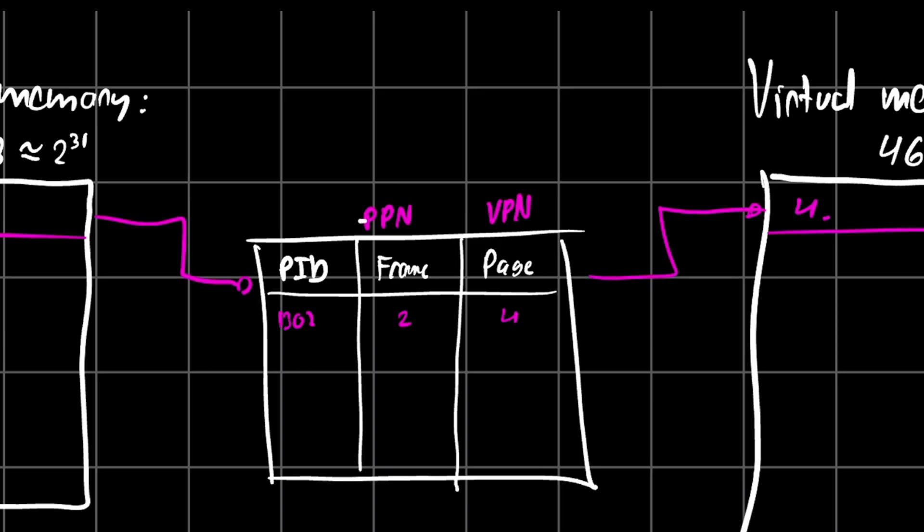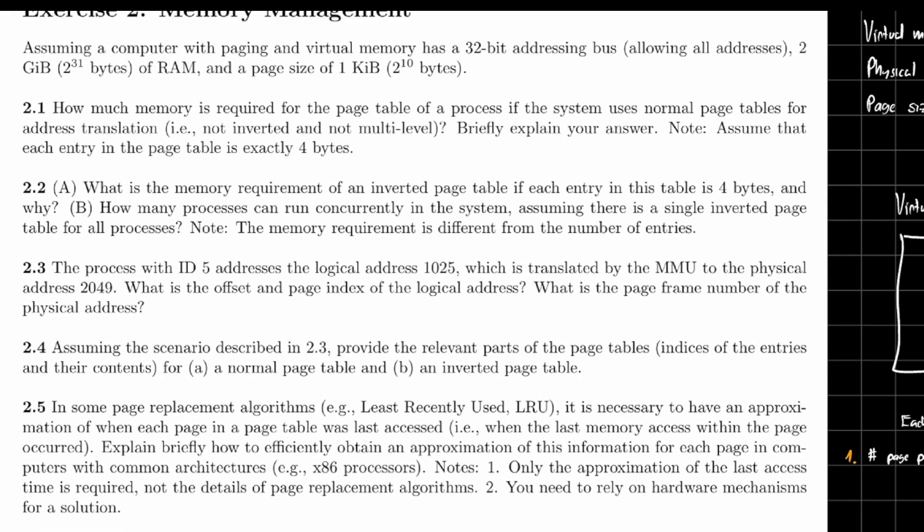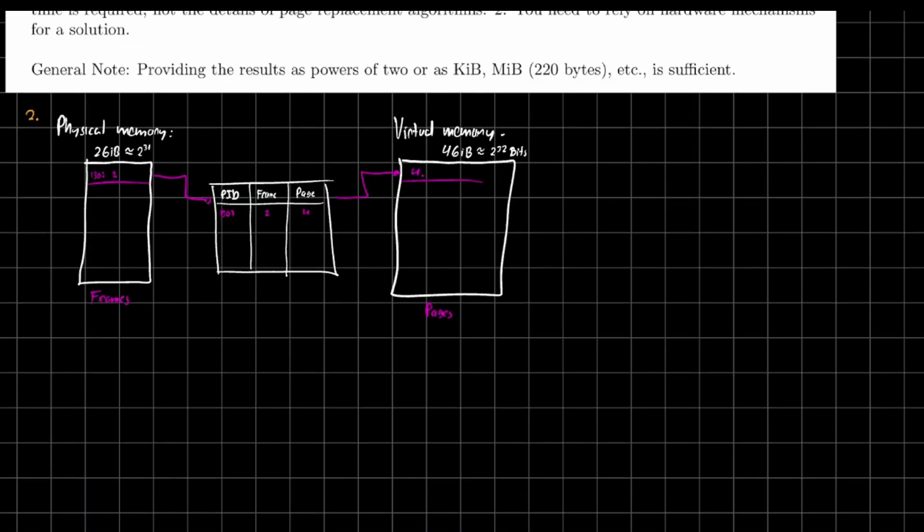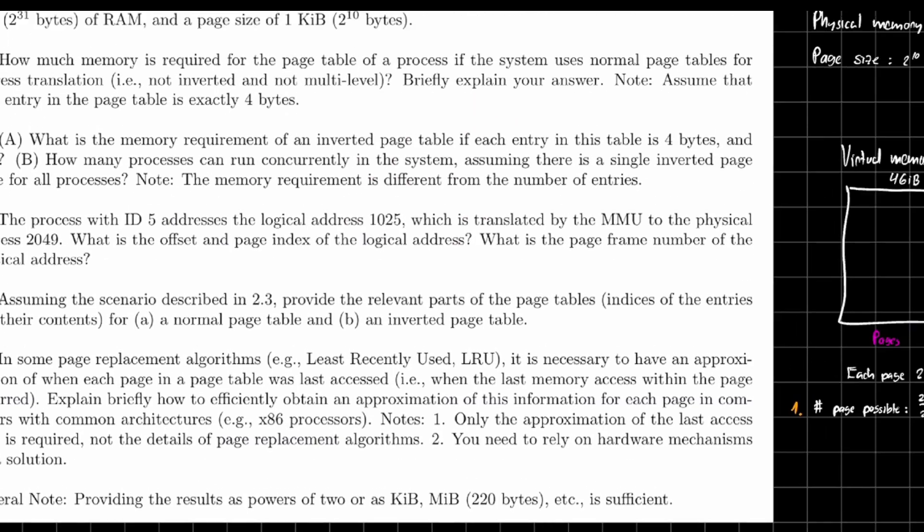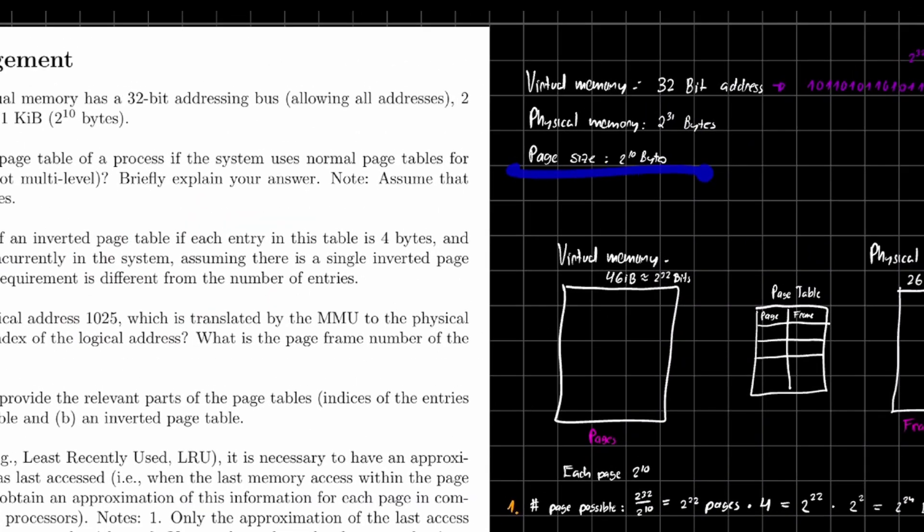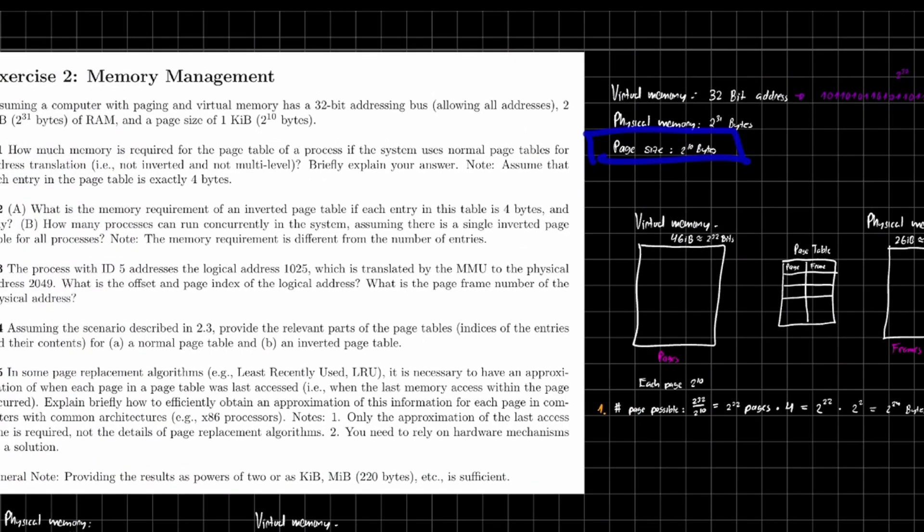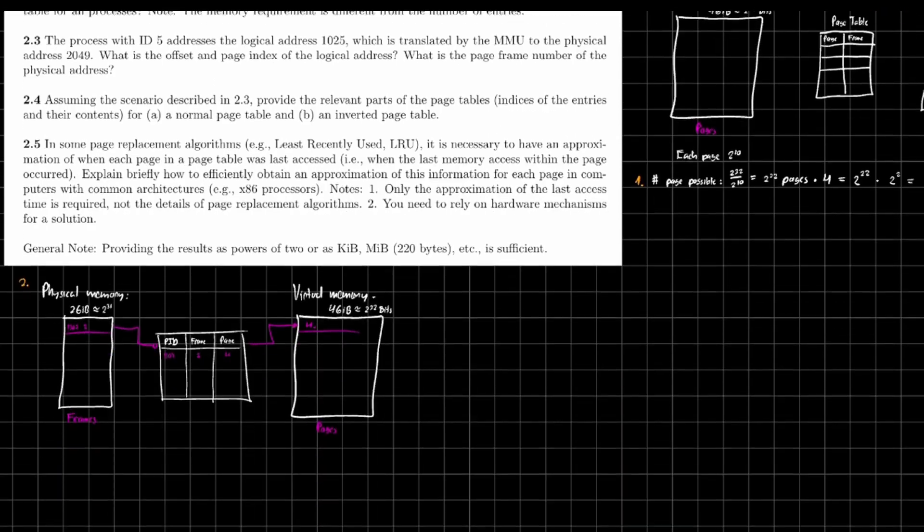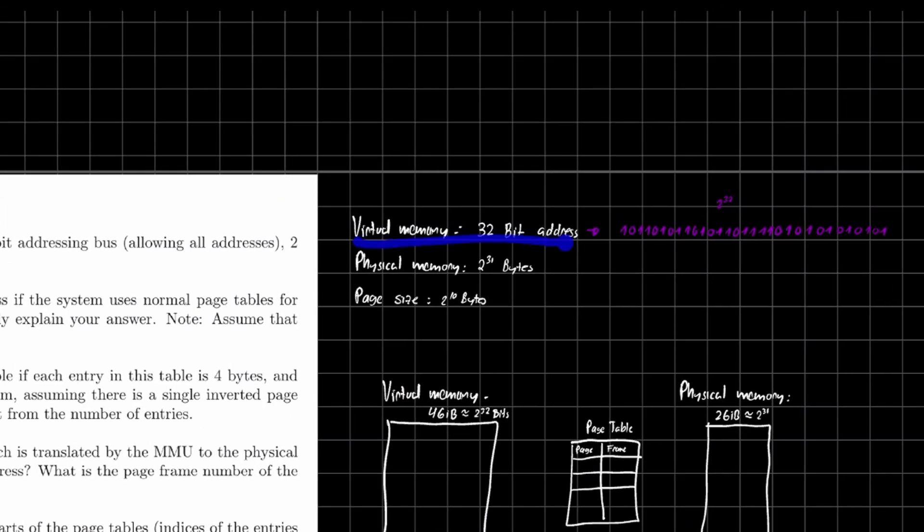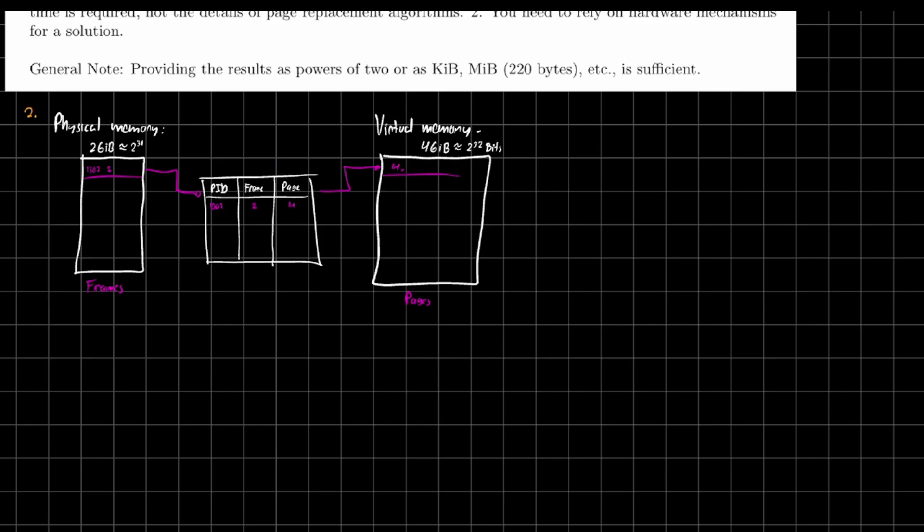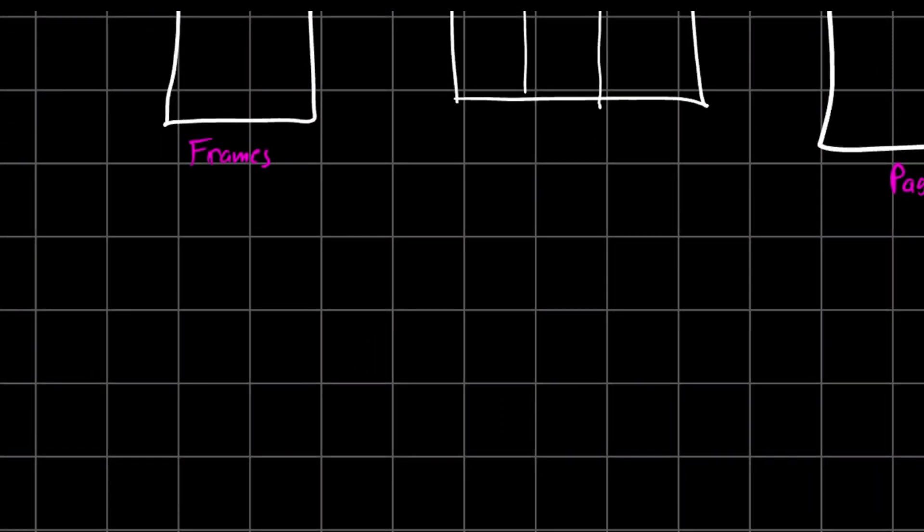So now we have the theory. So they're asking us now, what is the memory requirements of an inverted page table if each entry in this table is 4 bytes? Well, if we have this, and we basically know that the page size is of 2 to the 10 bytes, that means each frame size is going to be the same. So instead of taking the virtual memory space, we're going to take basically the physical memory space. So we're going to only divide physical memory space by the size of each page. So in this case, it's 2 to the 31 over 2 to the 10. That's going to result to us in 2 to the 21.